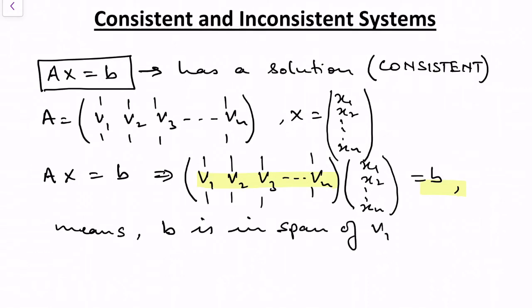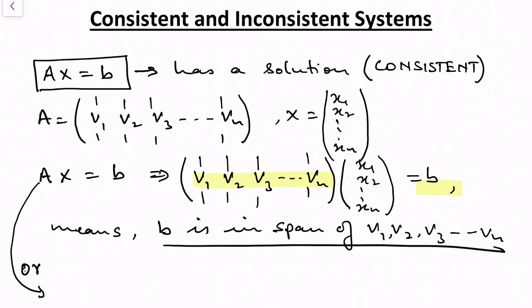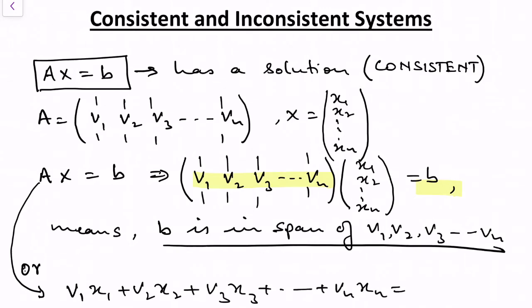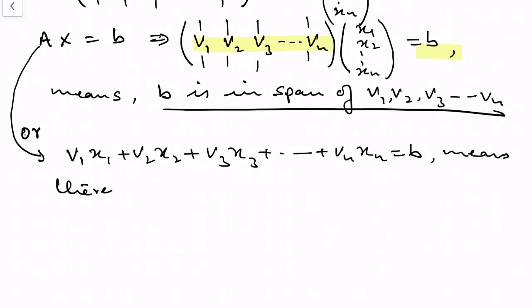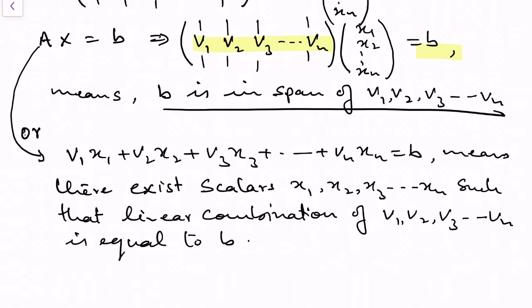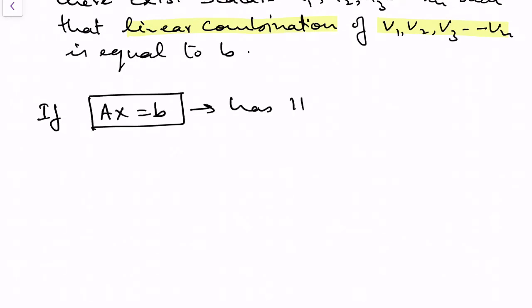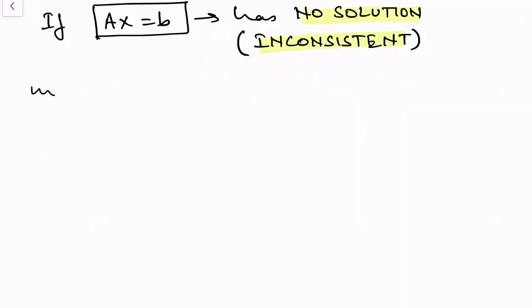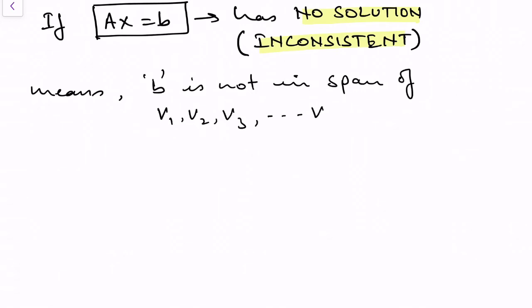This equation can be written as v1·x1 + v2·x2 + v3·x3 + ... + vn·xn = b, meaning there exist scalars x1, x2, x3, ..., xn such that the linear combination of v1, v2, v3, ..., vn equals b. Now if Ax = b has no solution, the system is inconsistent — meaning b is not in the span of vectors v1, v2, ..., vn.